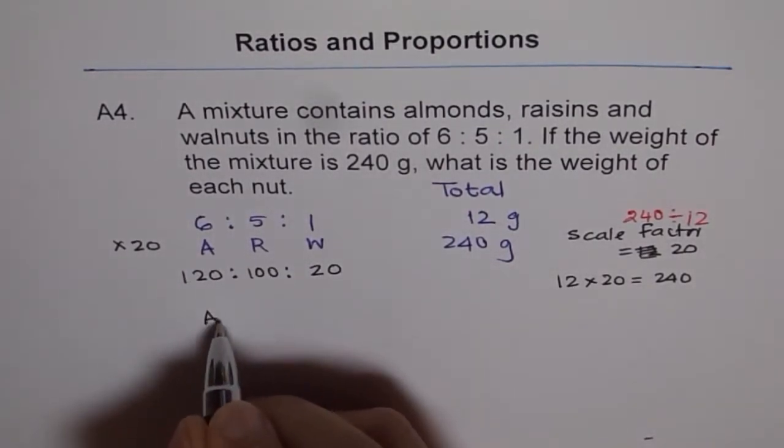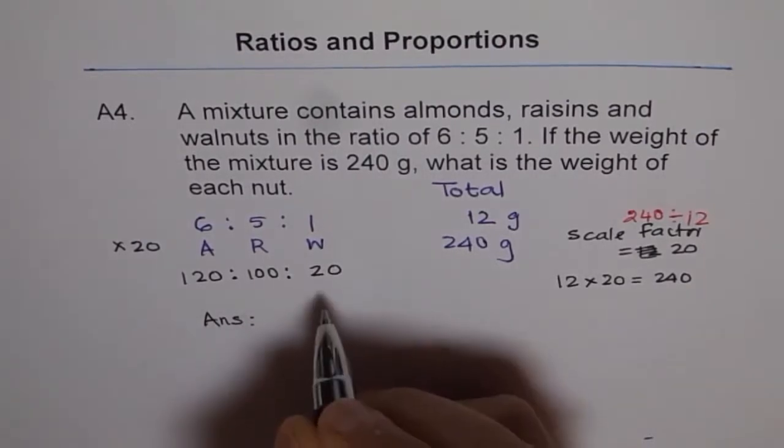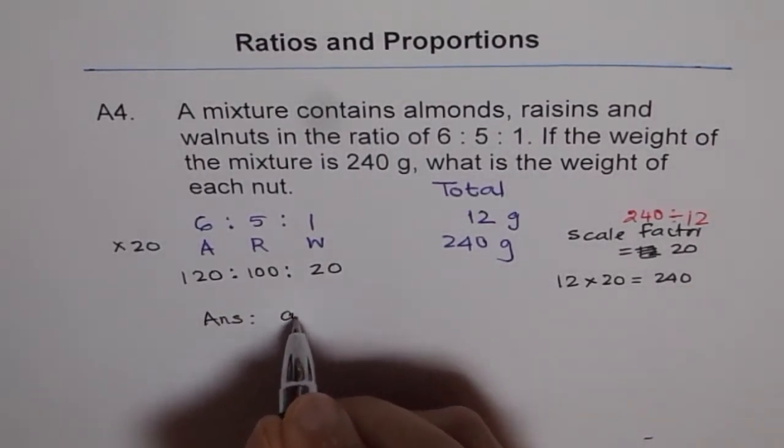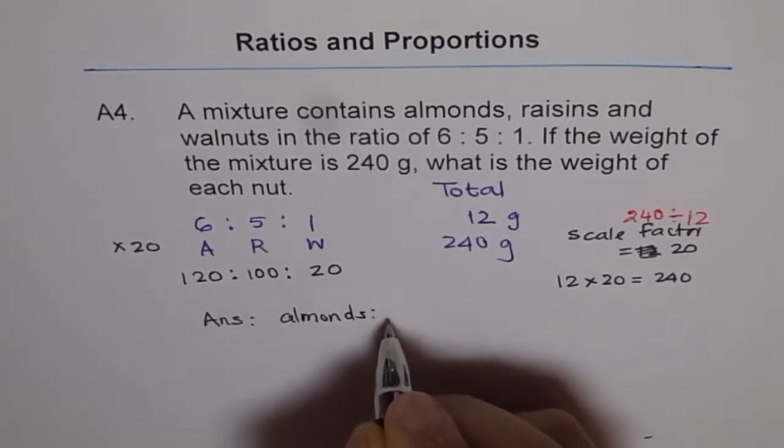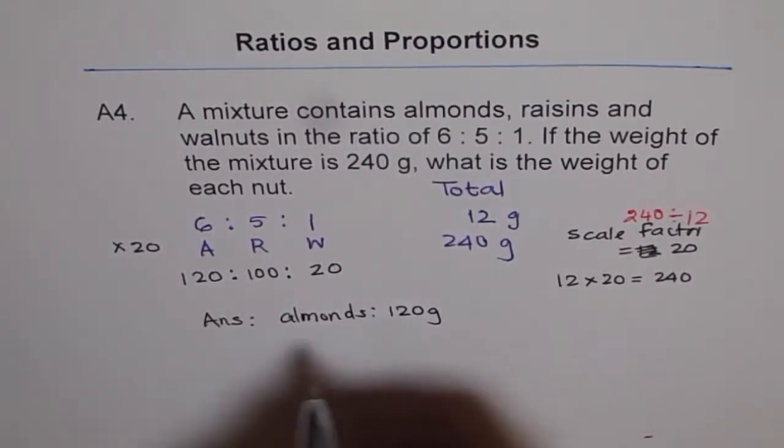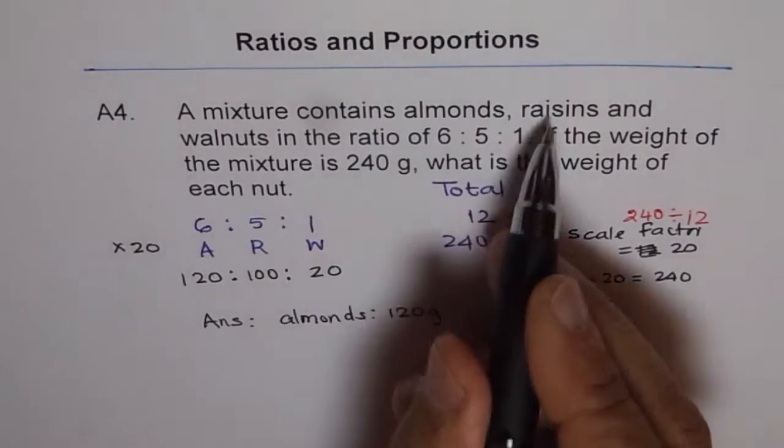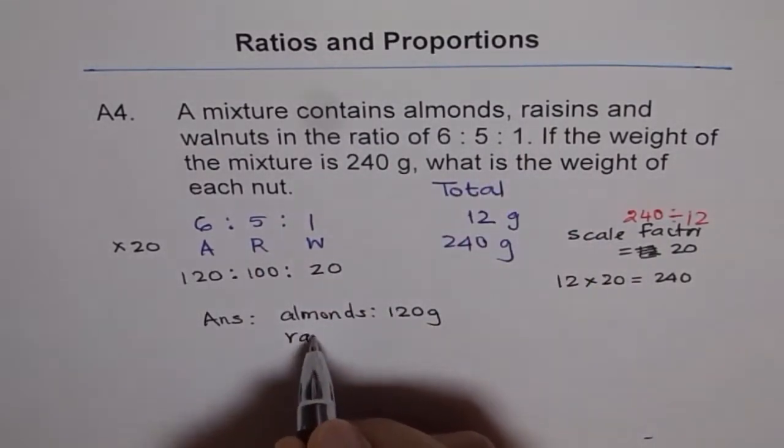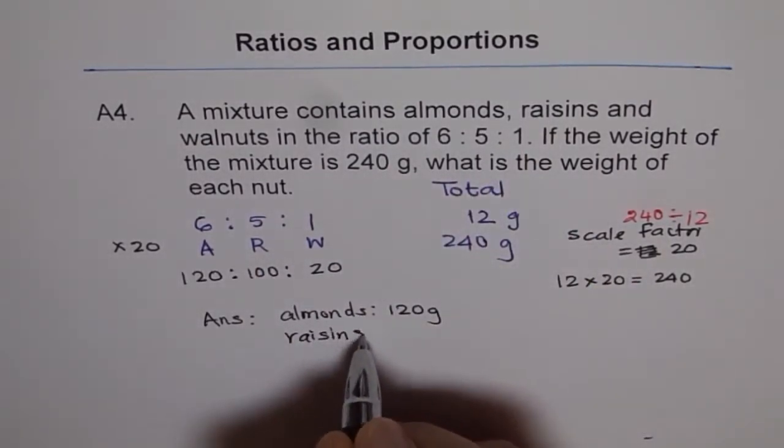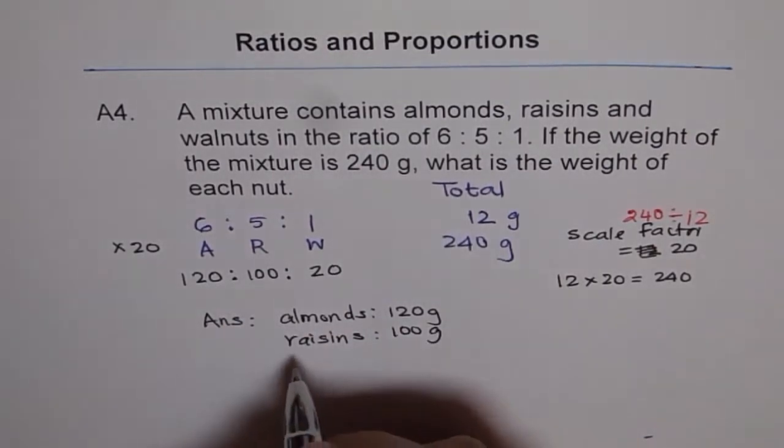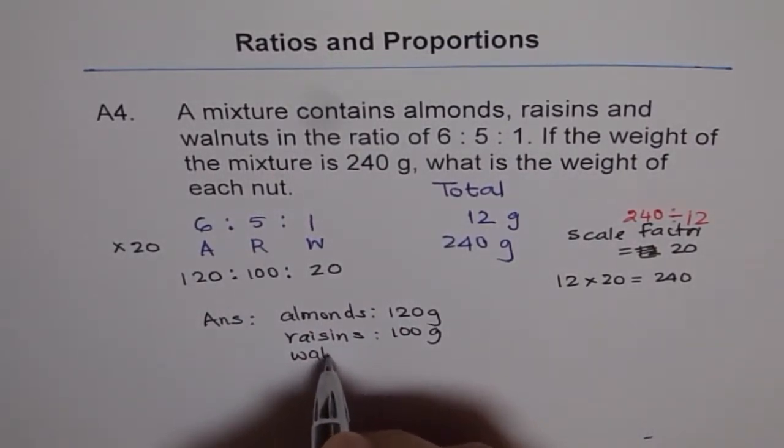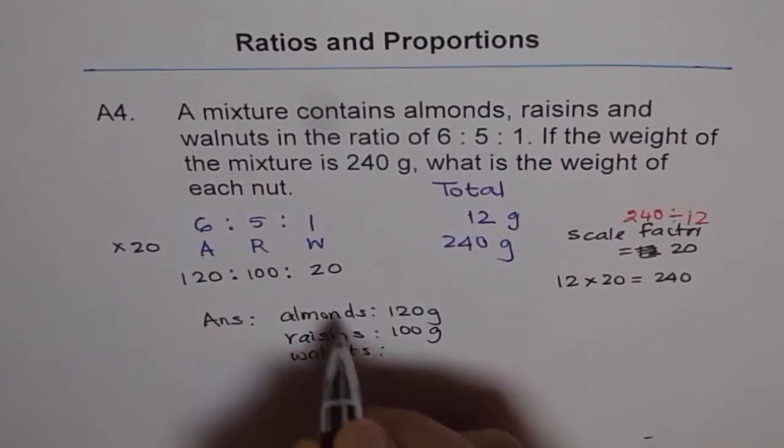And therefore, our answer is that we have almonds, 120 grams, right? And then we have raisins, 100 grams. And then we have walnuts, 20 grams.